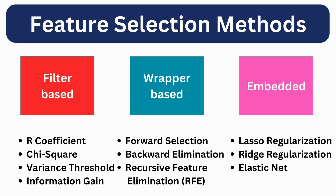There are three main types of feature selection techniques: filter-based methods, wrapper-based methods, and embedded methods. Here I have listed some common methods against each technique. For filter-based, we have R coefficient, chi-square, variance threshold, and information gain.